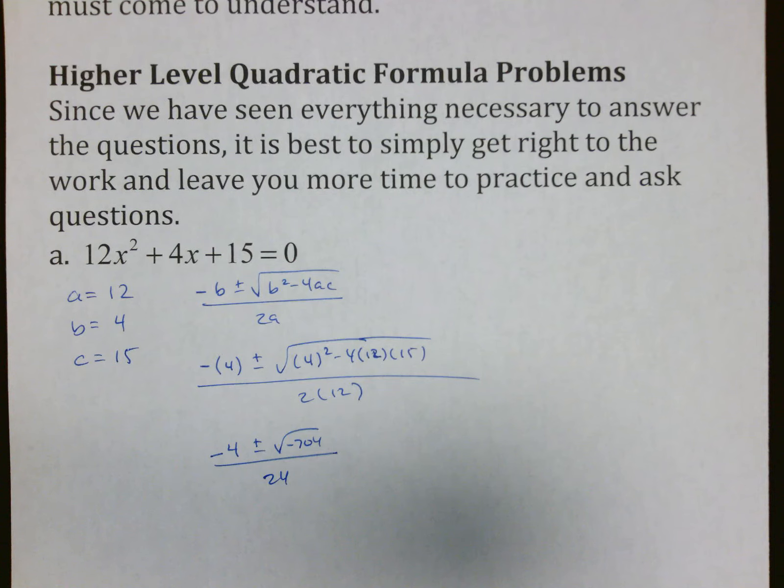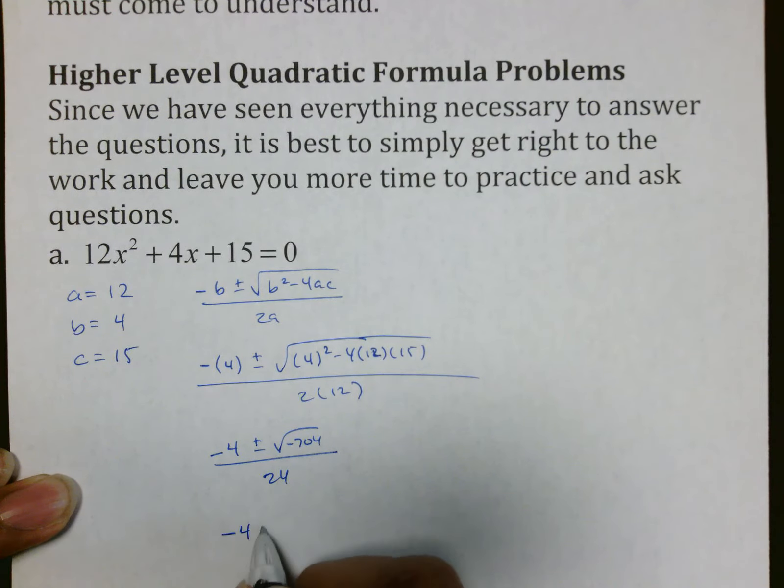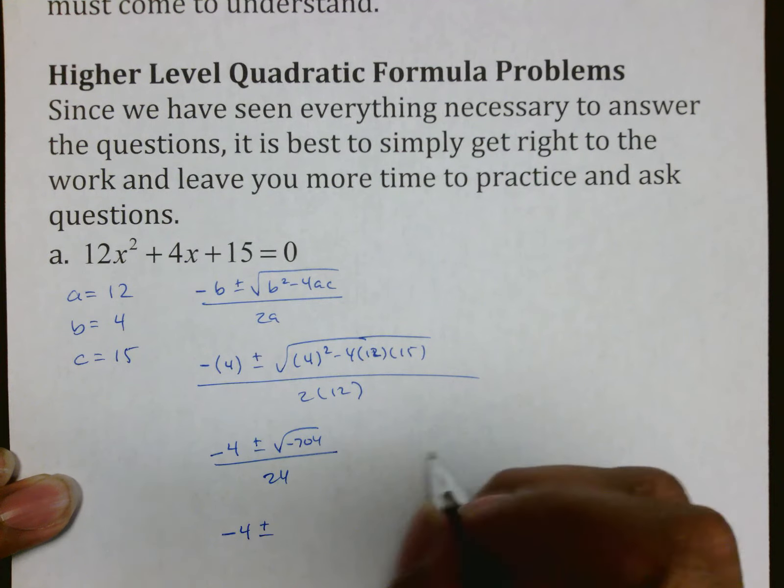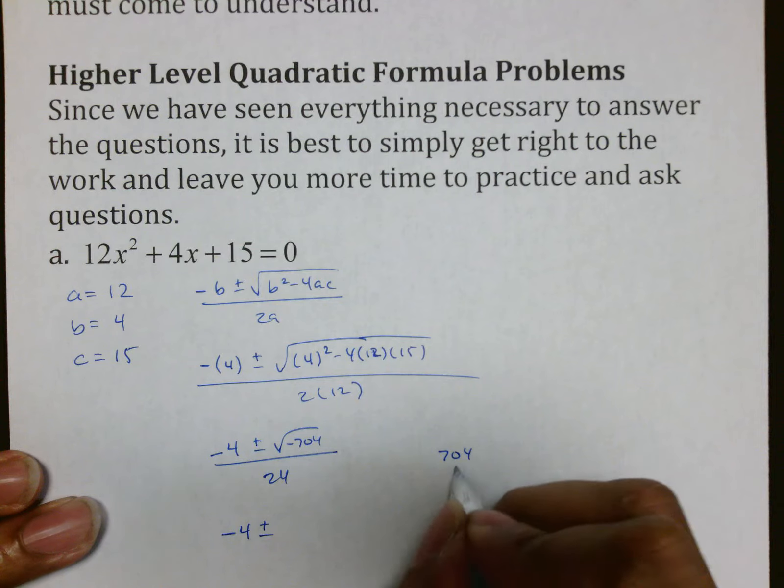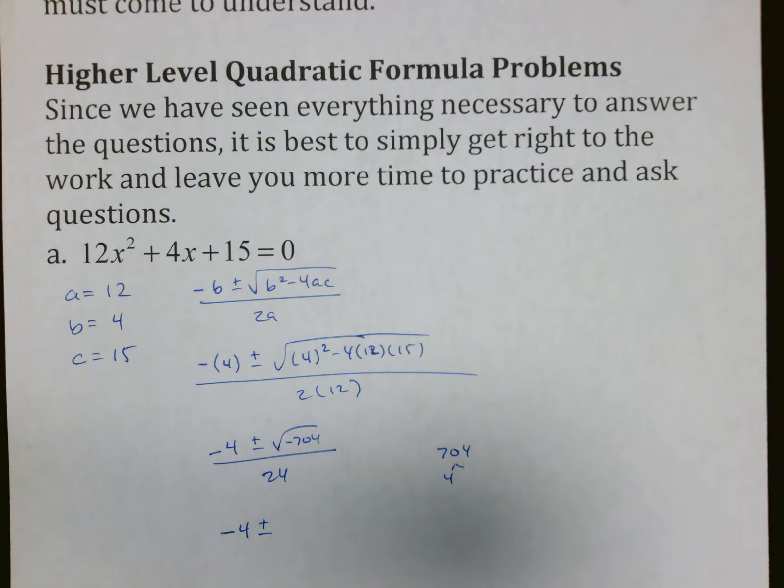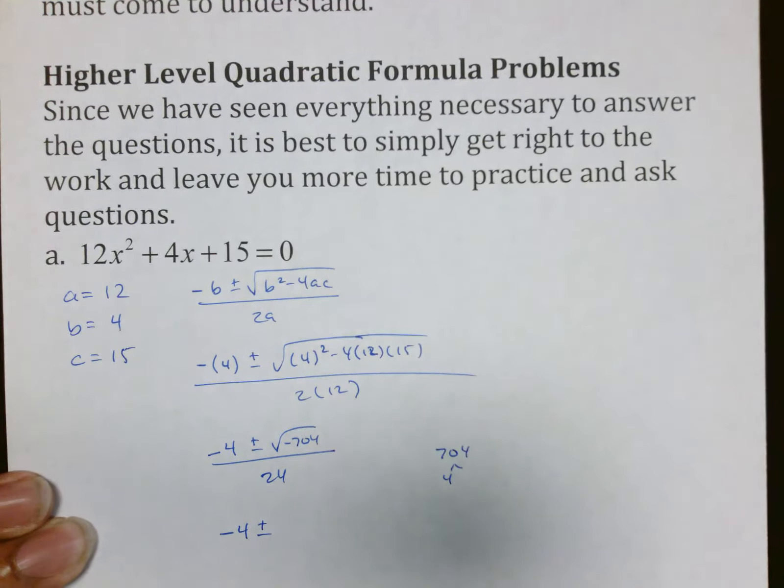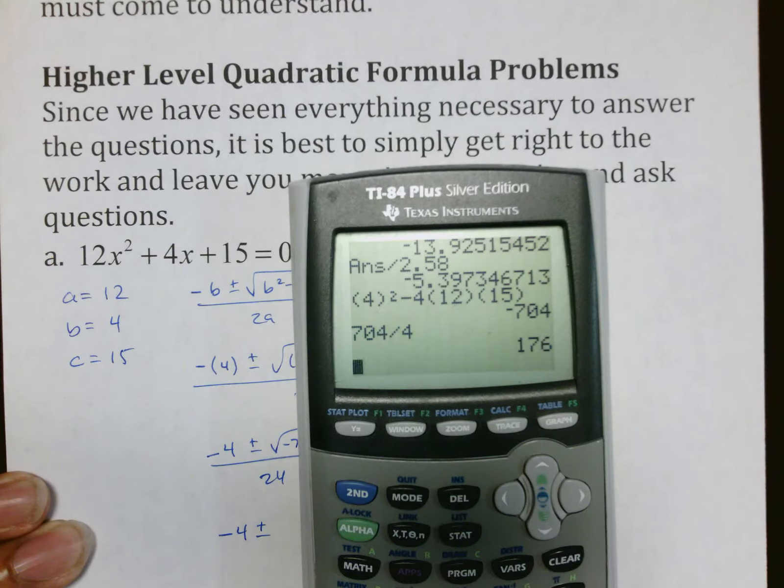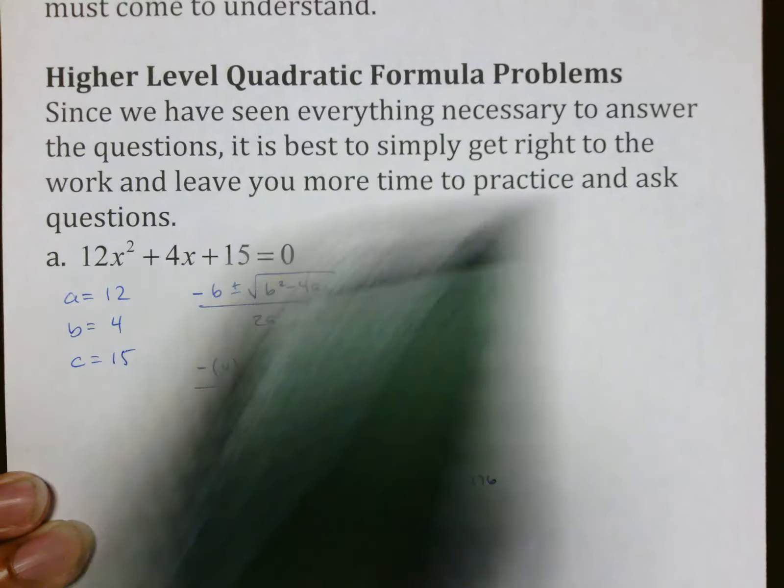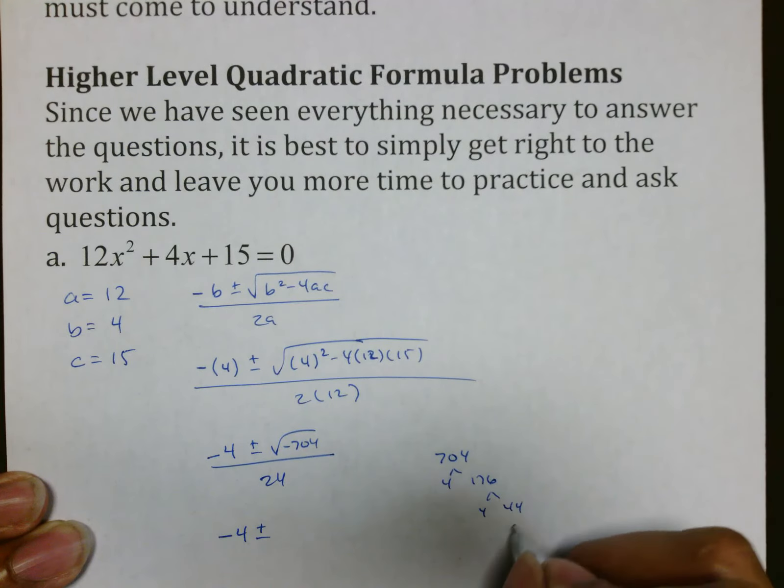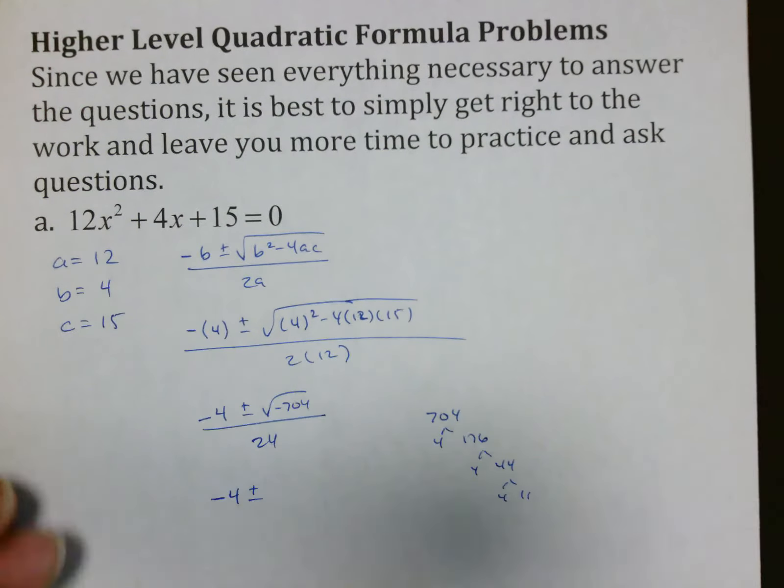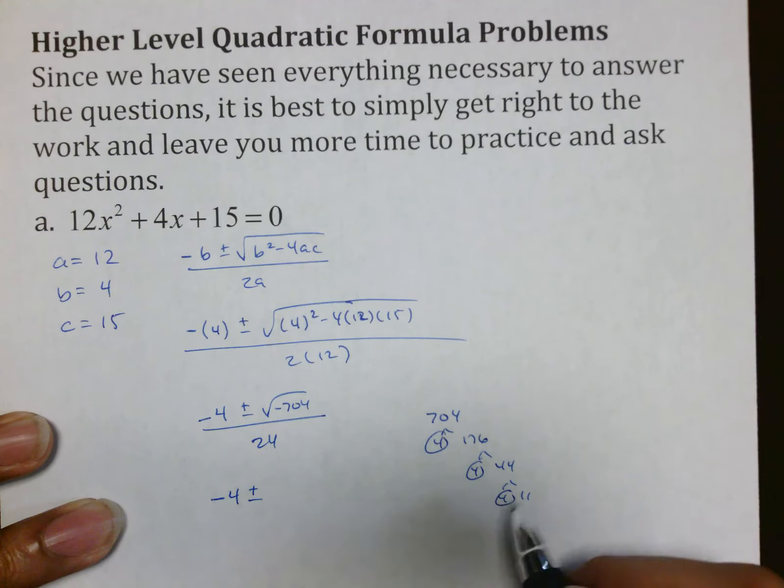4² minus 4 times 12 times 15 equals negative 704 all over 24. So now what we have to do, first off we know that this is imaginary. Let's break this down here. So I know that 704 divided by 4 is 176, and 176 divided by 4 is 44, and this is 4 times 11, which means 2, 2, and 2 come out.